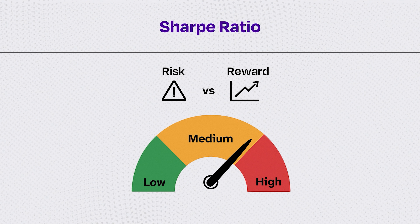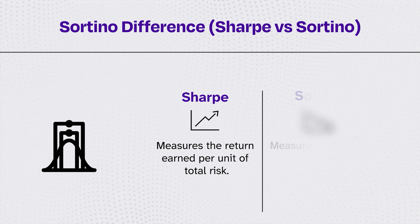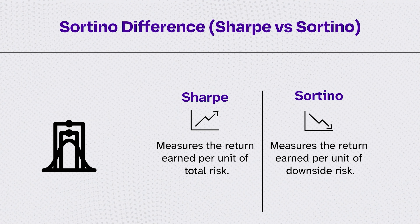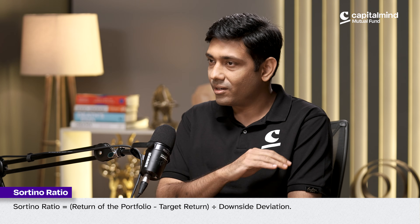Sortino is very similar. All it does is say that when you are investing, you're getting volatility which is both sides — positive and negative returns. Positive returns are good for you in a long portfolio, so why should we penalize for them? Volatility is in the denominator, so take out all the positive returns, look at only negative returns and their volatility. That's called downside deviation. Same numerator — returns minus risk-free rate — divided by only downside deviation. That gives you Sortino.